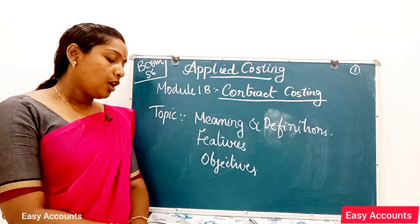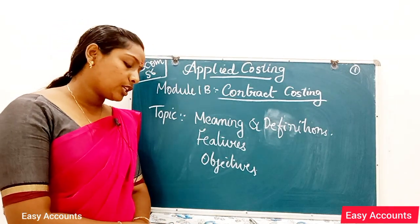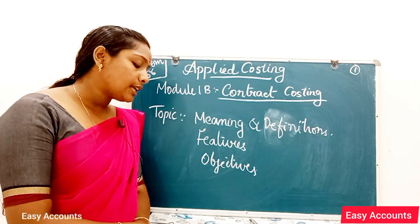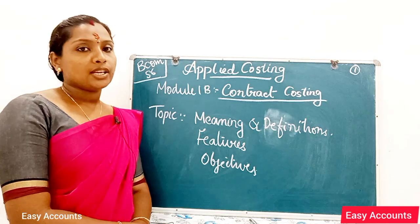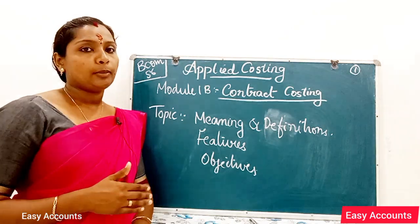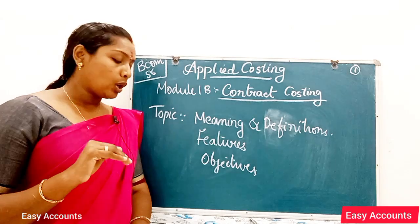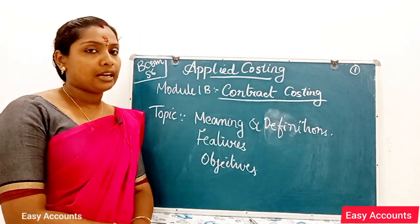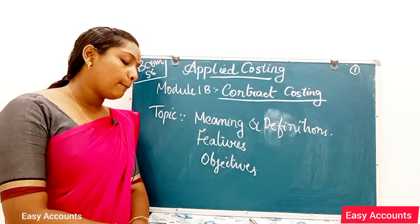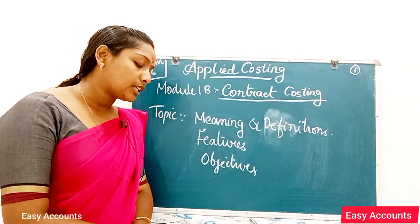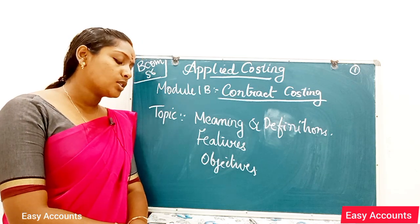Now, the objectives of contract costing. The first objective is to ascertain the cost at each stage of work. The cost of each stage of work needs to be computed, as payment to the contractor often depends on the stage of work completed and the cost incurred.